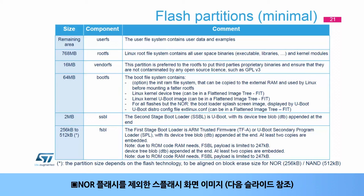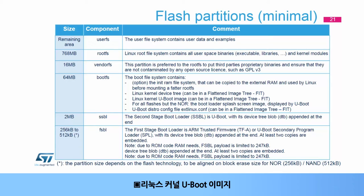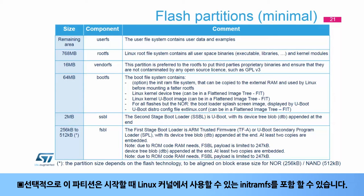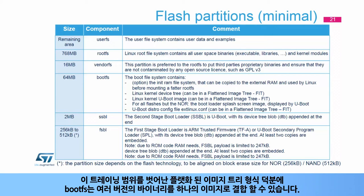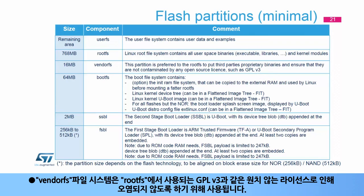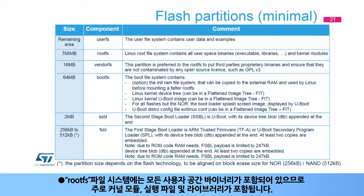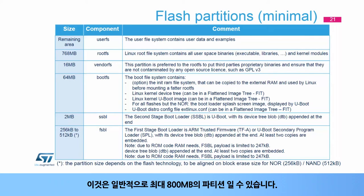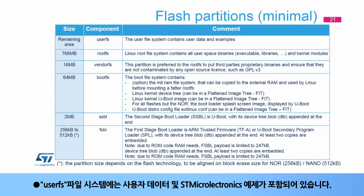the splash screen image (except for NOR flash), Linux kernel U-Boot image, Linux kernel device tree, and optionally an initRAMFS. The boot FS can combine several versions of those binaries in a single image thanks to the flattened image tree format. The Vendor FS file system stores third-party binaries to ensure they cannot be contaminated by unwished licenses such as GPLv3. The root FS file system contains all user space binaries — mainly kernel modules, executables, and libraries — and can be up to 800 MB wide. The user FS file system contains user data and STMicroelectronics examples.